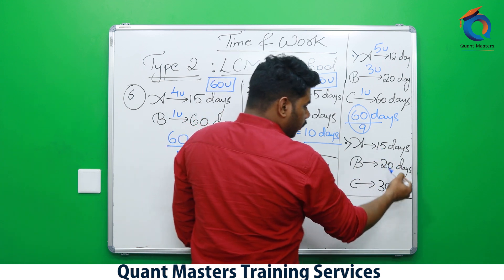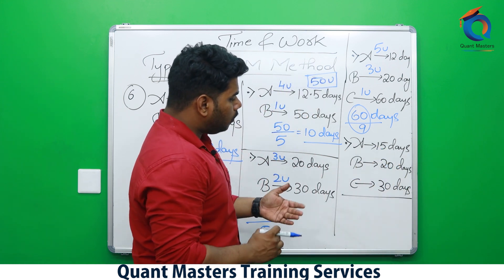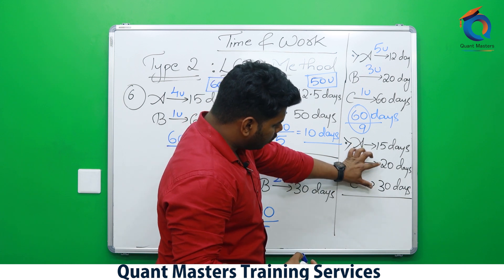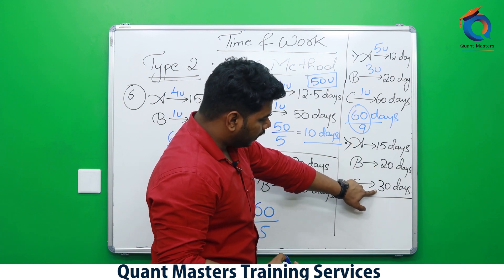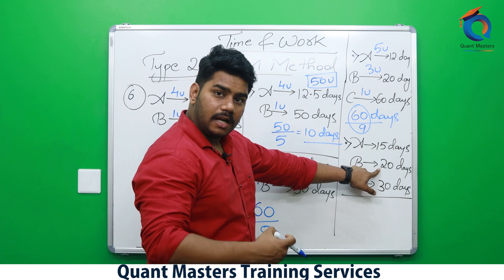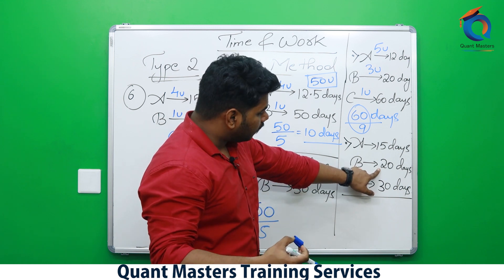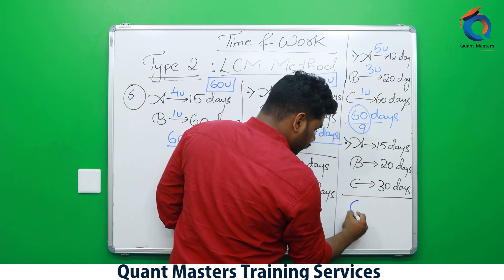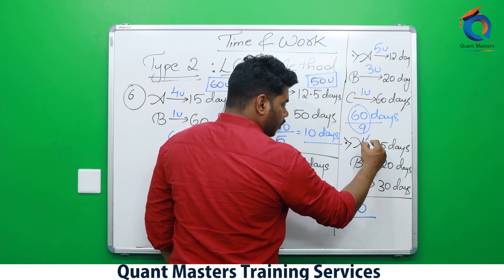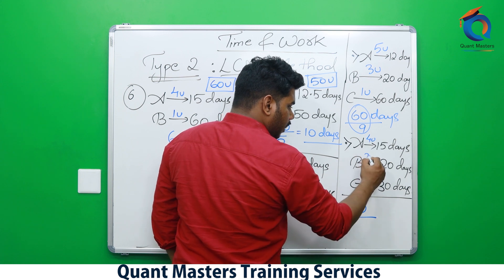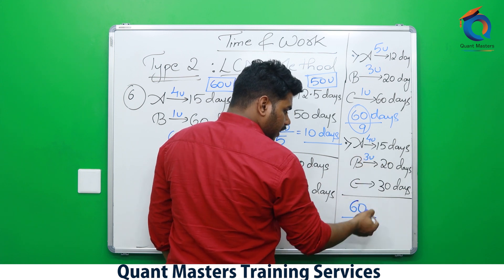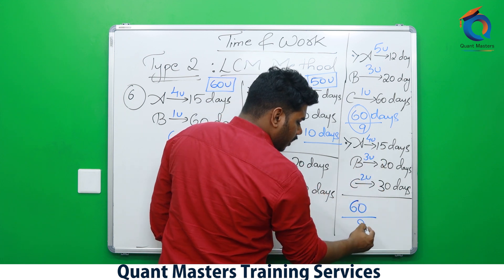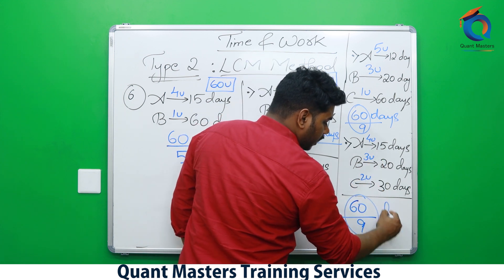Next: A takes 15 days, B takes 20 days, C takes 30 days. For LCM of more than 2 numbers, take the largest two: 20 and 30. Multiply 30 until 20 divides — that's 60. And 60 is a multiple of 15. So LCM is 60. A does 4 units/day, B does 3 units/day, C does 2 units/day. Together 9 units/day. Answer is 60/9 days.